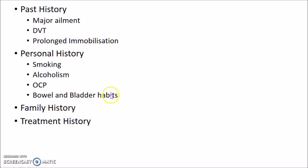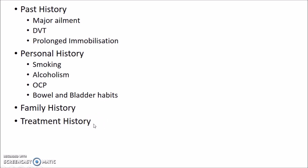Bowel and bladder habit history should be taken because constipation is another risk factor for developing varicose veins. Family history — that is, if there are similar complaints in any other member of the family — should be taken. Treatment history should also be taken; the patient could have been treated by injection, elastic stocking, or may have been operated previously.